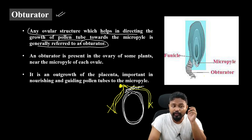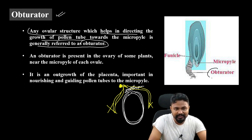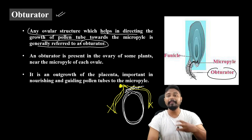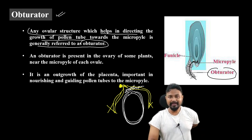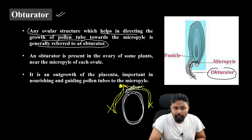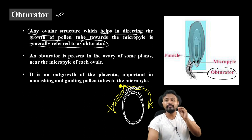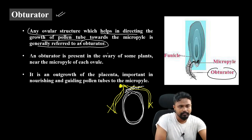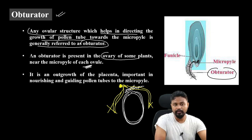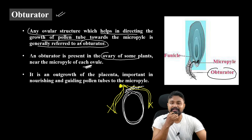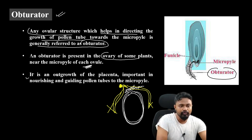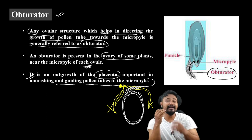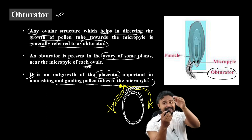The obturator will help guide the pollen tube towards the micropyle, where the egg is present. The obturator is present in the ovary of some plants near the micropyle of each ovule. It is an outgrowth of the placenta, important in nourishing and guiding the pollen tube to the micropyle. The main function of this special structure is to guide the pollen tube towards the micropyle.